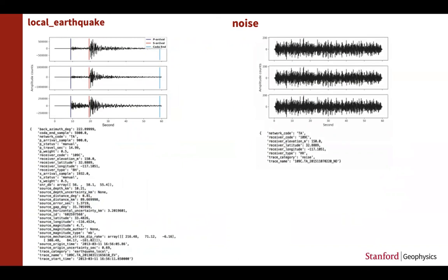These are two samples from each category. Three-component waveforms, each one minute long. There are 35 labels or attributes associated with each earthquake sample and 8 associated with noise samples.